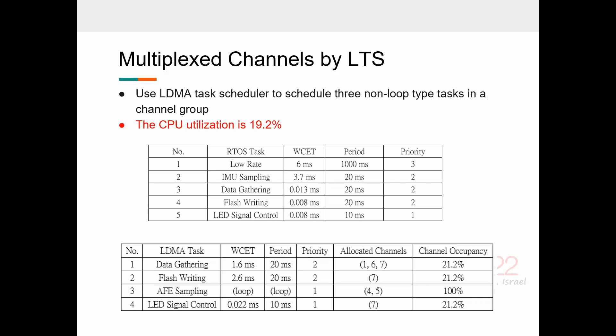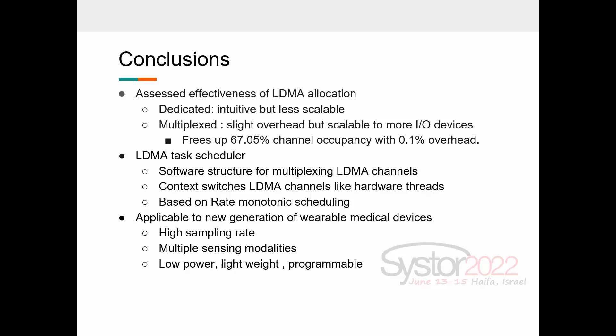In conclusion, dedicated channel allocation is not always the most efficient solution. It's intuitive, but less scalable. Despite the fact that the multiplex allocation will cause slight overhead, it's scalable to more input-output devices. The LTS we propose to schedule the LDMA task is a software structure for multiplexing LDMA channels. It can context switch LDMA channels like hardware threads. And it's based on rate monotonic scheduling. This mechanism is applicable to new generation of wearable medical devices, which is high sampling rate, multiple sensing modalities, low power, lightweight, and programmable. Thank you for listening.